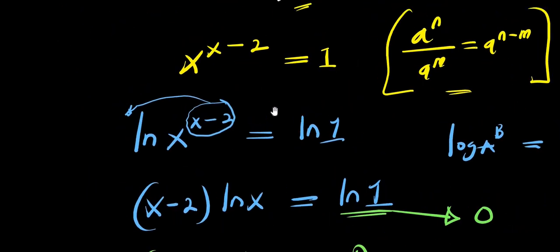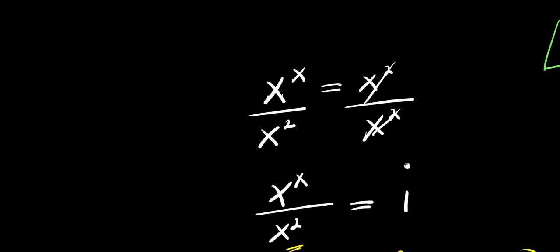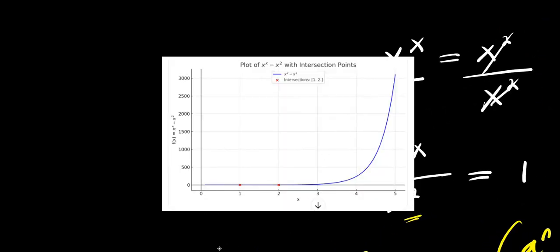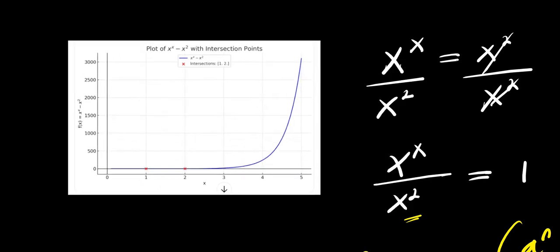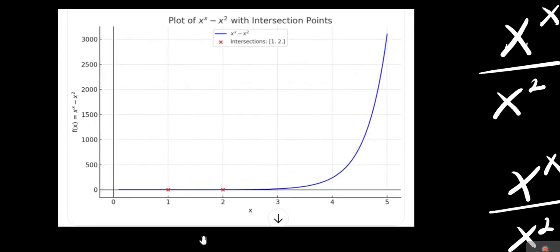The next thing is the graphical representation of this equation. Here is the graph — if you observe it carefully, you will see two points of intersection: one at x = 2 and one at x = 1. These are the two solutions.